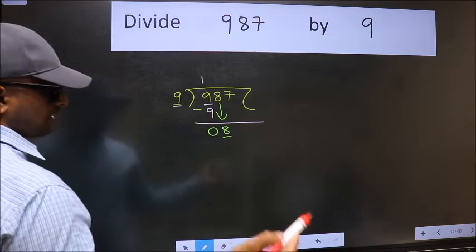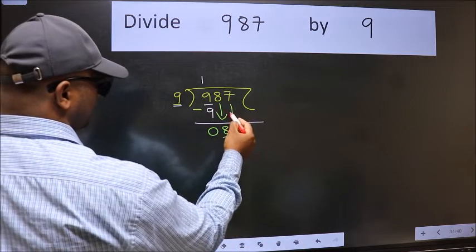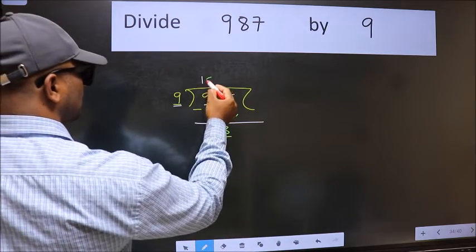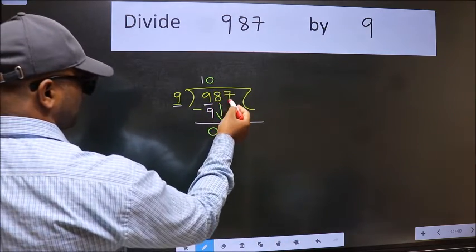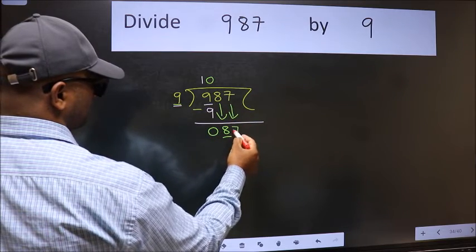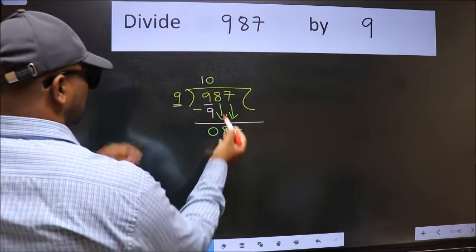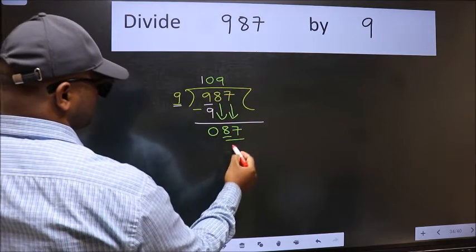So we should bring down the second number. And the rule to bring down the second number is we should put 0 here. Then only we can bring this number down. Now 87. A number close to 87 in the 9 table is 9 nines 81.